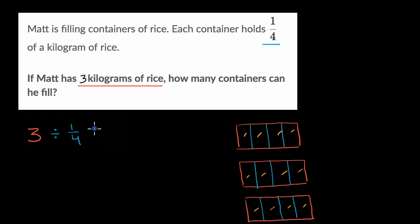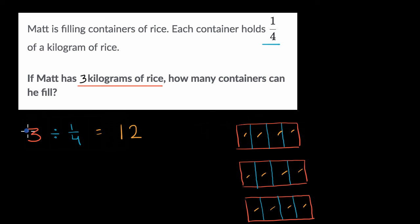So three divided by one-fourth is equal to 12. I encourage you to really think about why this is the case. If you take a whole number like three and divide it by one-fourth, you get a value larger than three — specifically four times three. Think about why that is the case.